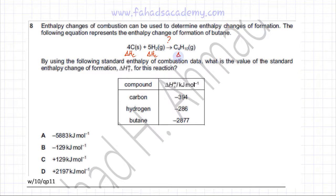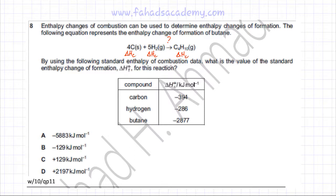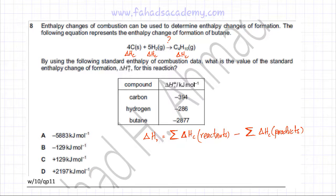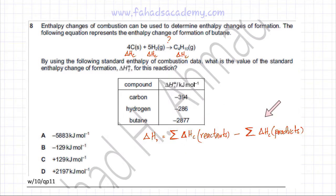The enthalpy change of combustion of butane is -2877 kJ/mol. If in a reaction you're given the enthalpy changes of combustion of reactants and the enthalpy changes of combustion of products, you can apply a simple formula. That formula is: the enthalpy of a reaction equals the sum of the enthalpies of combustion of reactants minus the enthalpy of combustion of products.